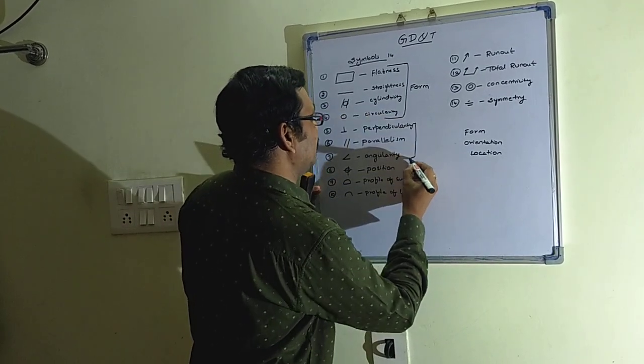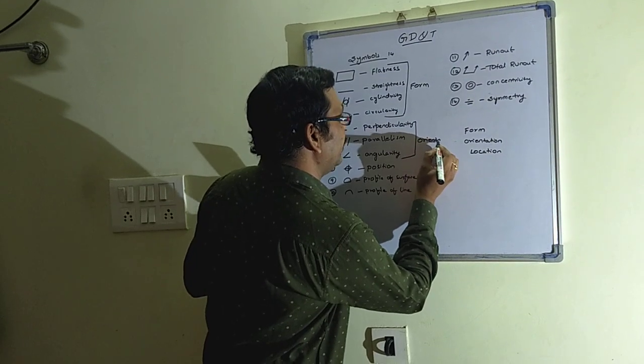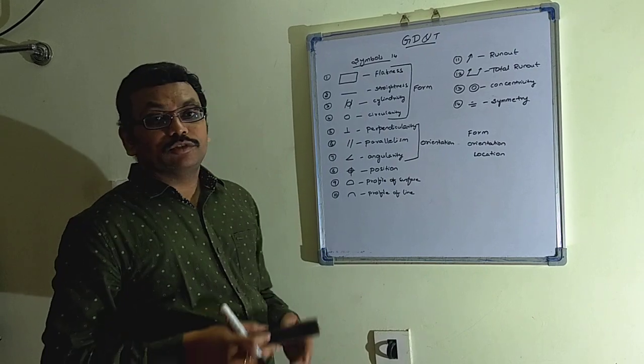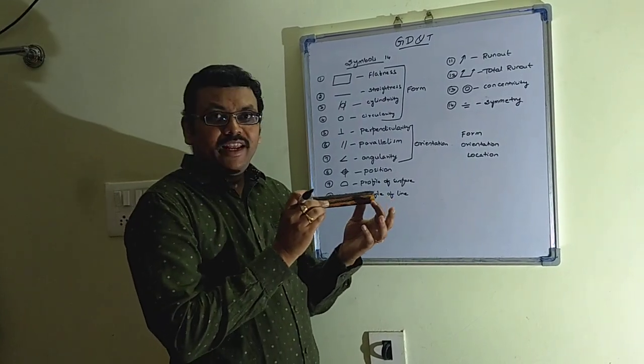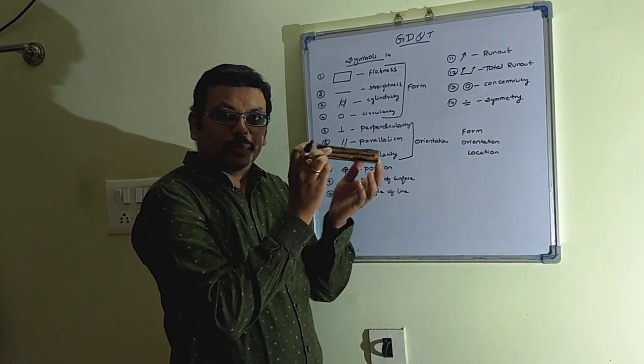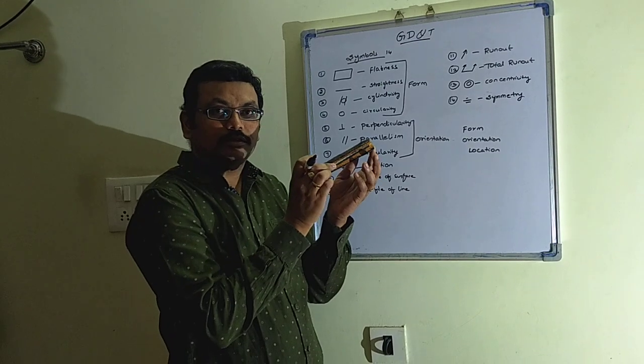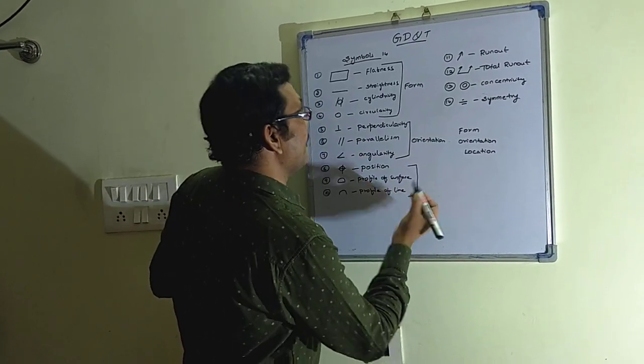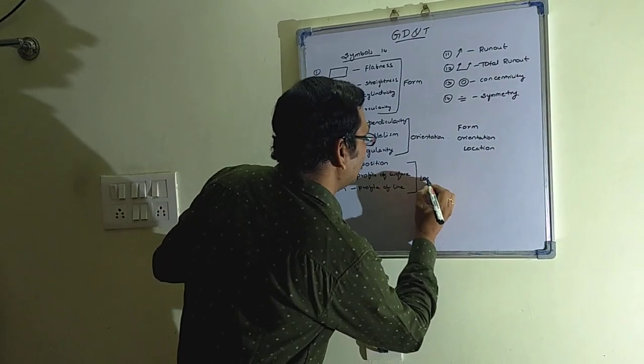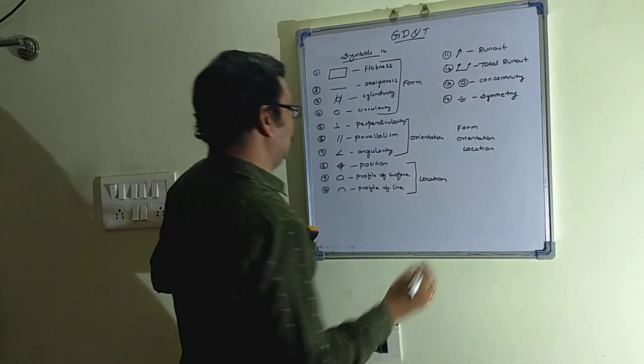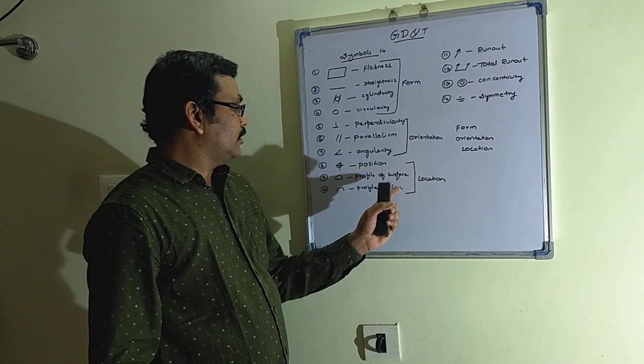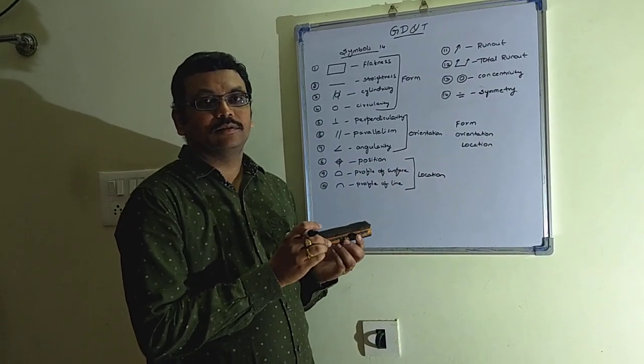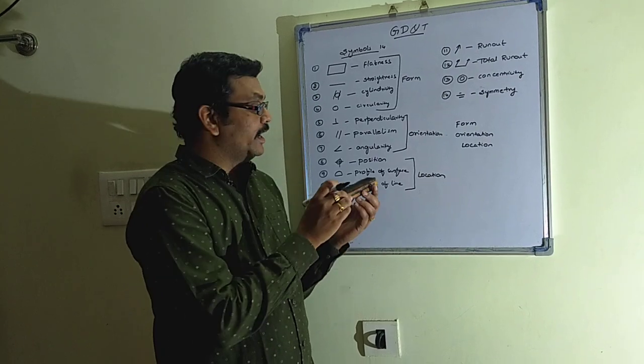And this is used for orientation. These 3 symbols - perpendicularity, parallelism, and angularity - are used for defining orientation of the component. These 3 are used for location, locating a component.